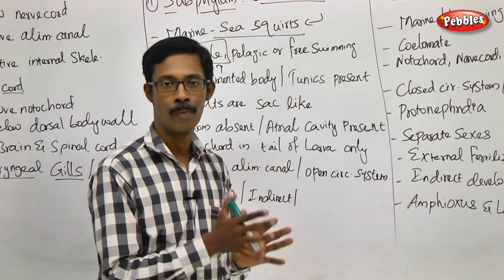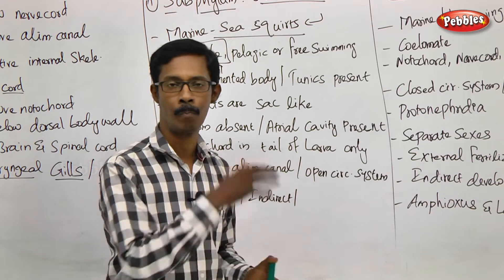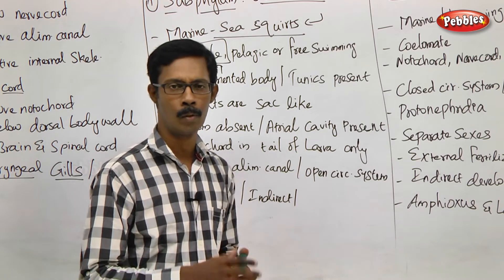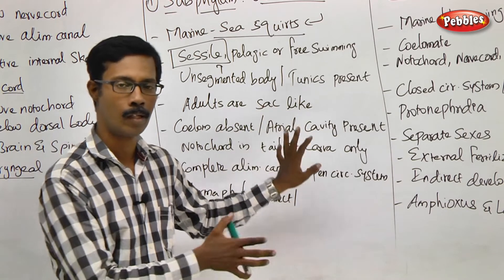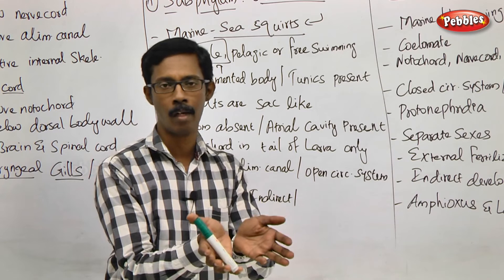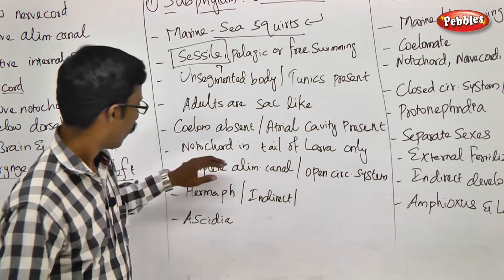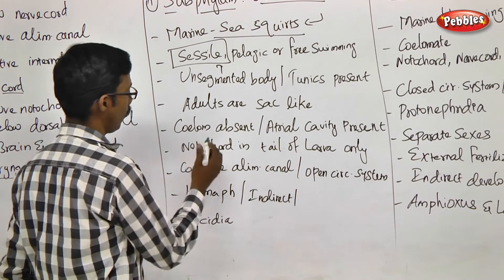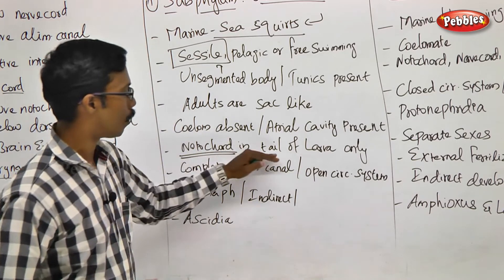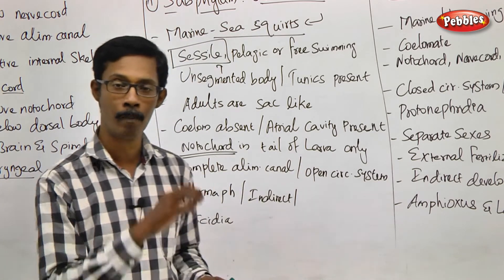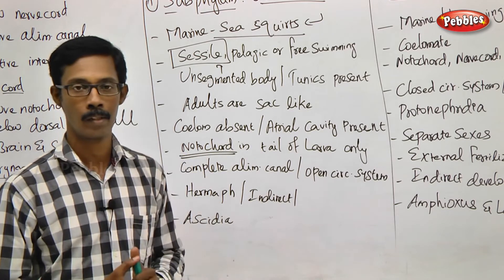Coelom is absent in Urochordata. Normally in chordata, coelom is present. In Urochordata there is an atrial cavity instead. There is no true heart cavity — there is a cavity of the pharynx. The notochord is present only in the larva, specifically in the tail region. Notochord is present in the tail region of the larva.